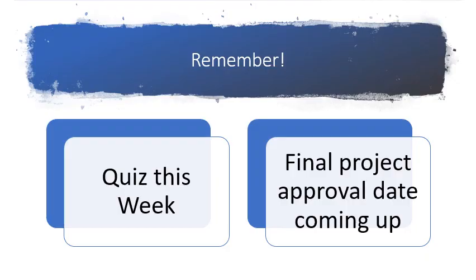Just a reminder that the quiz is coming up this week, covering most everything we've discussed from week three through week six. Also very importantly, the final product approval date is coming up — you need to be in contact with me through email or Canvas messaging to get my approval. If you haven't started this process, I typically ask you to refine your ideas so we can come up with an acceptable and achievable final product. Make sure you plan enough time for that process and don't wait until the very end to contact me for approval.